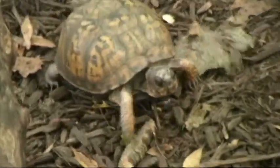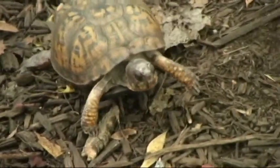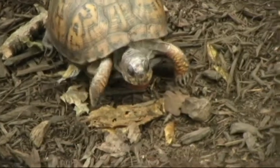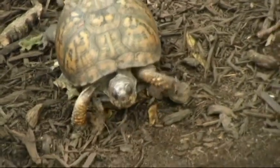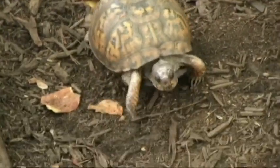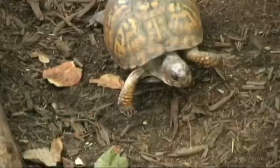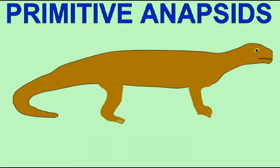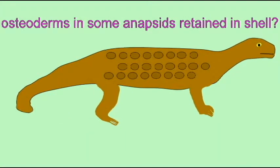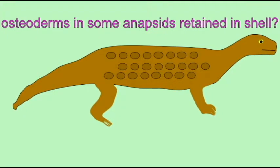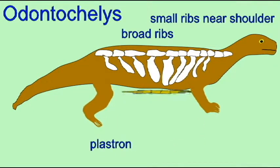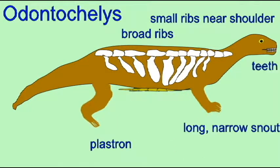If the creationist model is true, turtles never evolved from anything else, so there should be no transitional forms showing the evolution of early turtles from other groups. If the design model is true, it would be impossible to have half a shell or half of any turtle features.